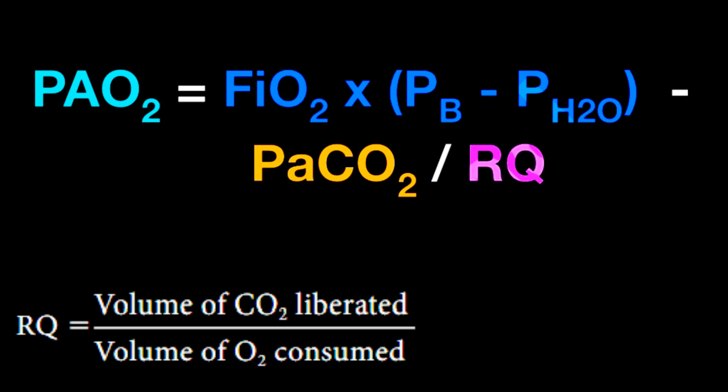Therefore, during extracorporeal carbon dioxide removal, despite a constant FiO2, the alveolar and arterial PO2 can decrease due to a decrease in respiratory quotient.